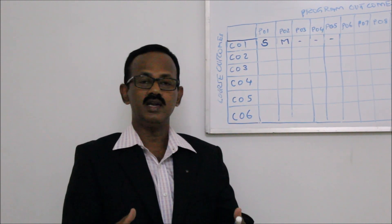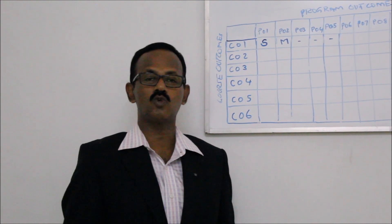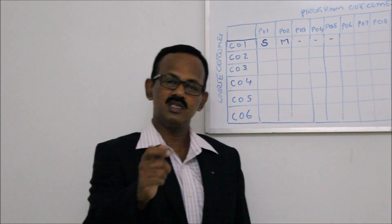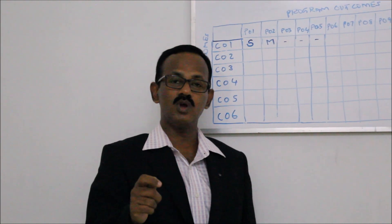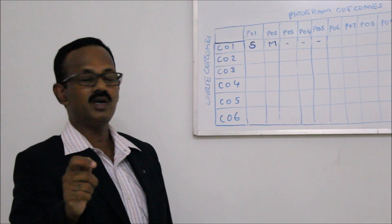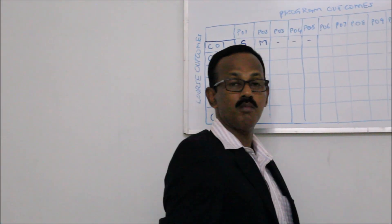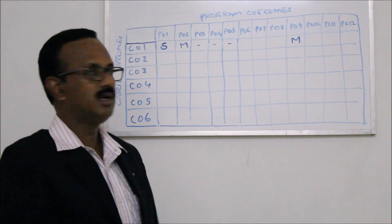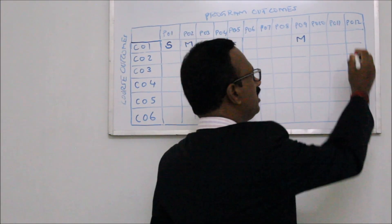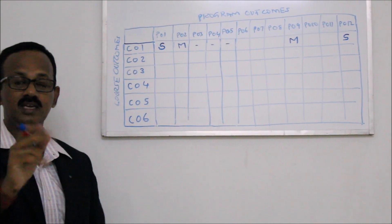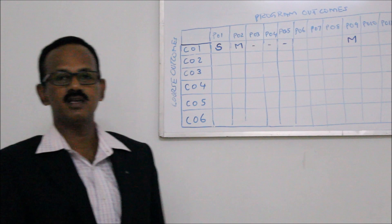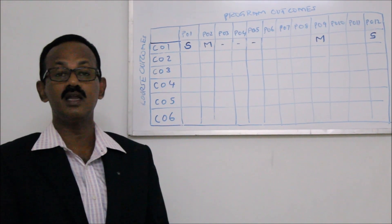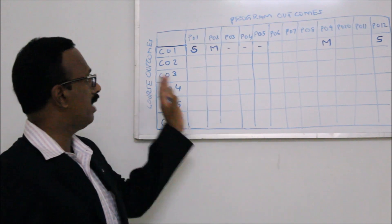When we divide the entire class into groups of three with different assignments for each group, we automatically teach individuality and teamwork, which is program outcome 9. So I will say this is moderately achieved, and even very strongly through this particular course outcome and assignment, we are able to say that course outcome 1 is related to lifelong learning and this has been inculcated in the learning process. This is how mapping has to be done.